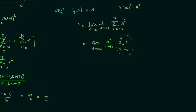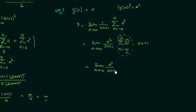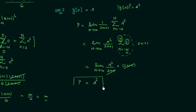So we have A² times limit N tends to infinity of (1/(2N+1)) times the summation from n = -N to N of 1. This summation equals 2N+1, because when you add 1 from -N to N, you get 2N+1. So: limit N tends to infinity of A²(2N+1)/(2N+1). The (2N+1) terms cancel out, and the average power P is simply equal to A².